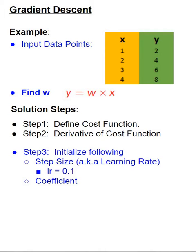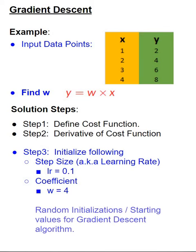The other variable that we have to initialize is the coefficient w itself. We are going to randomly pick a value of 4 in our example, which would be the starting value for the gradient descent algorithm. Remember, these are just random initializations for the algorithm and in no way expected to be close to the optimal value.